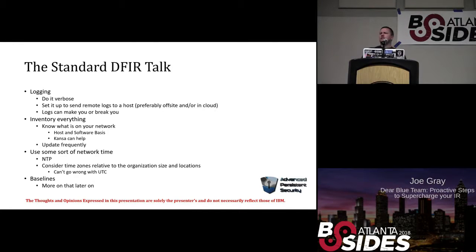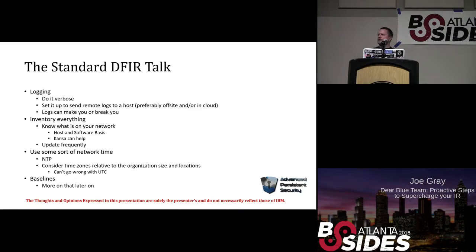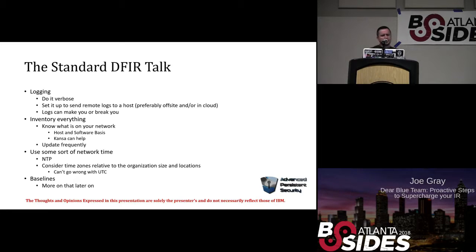We say inventory everything — that means knowing what hardware and software you have on the network. If you want to do that in an automated manner, there's a PowerShell script called Constant that can use PowerShell and WMI to interrogate the host and write it back to you. You also need network time synchronization — you might want your own NTP server or use time.nist.gov or Microsoft. If you're a global company across several time zones, you need to set a standard time zone for all logs. You don't want to be doing the math about whether something happened in Atlanta at what local time. Time, again, is money.